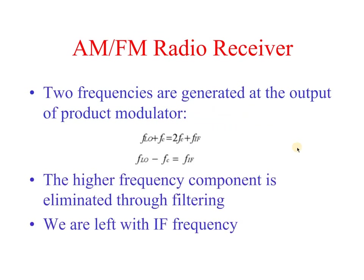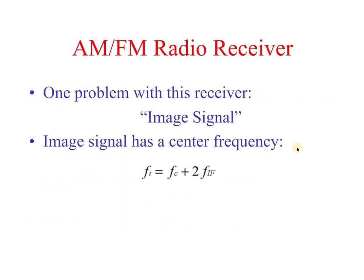Two frequencies are generated at the output of the product modulator: FLO + Fc and FLO − Fc. FLO + Fc equals Fc + FIF, and FLO − Fc equals FIF. The non-IF frequency components are eliminated through filtering, leaving only the IF frequency.